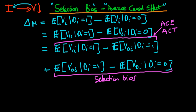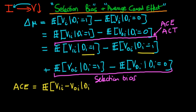First, thinking about the average causal effect: we can write it using the expression up here. Both terms are conditioned on di equals 1, so I can combine them. This is equivalent to the expected value of v1i minus v0i given that di equals 1. When written this way, the term inside the parenthesis is just what I called delta i — the causal effect of infrastructure spending — as defined in the last video.